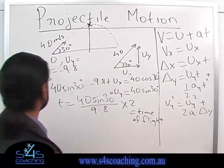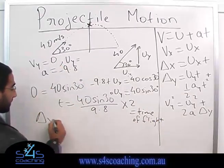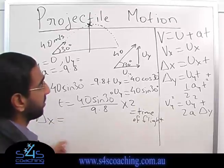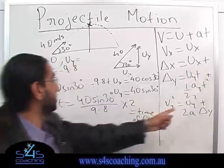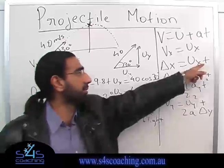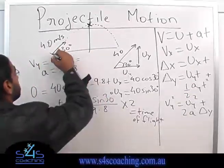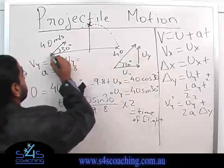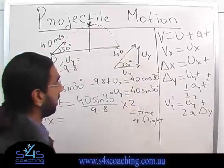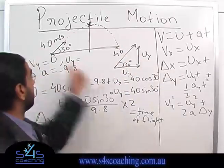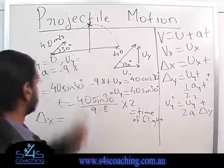The second thing they ask us to do sometimes is to find delta x. That again is very straightforward because you already have ux, we just calculated that, and the time. We actually use the total time because to go from there to there, we have to use the total time. So we can actually calculate delta x.